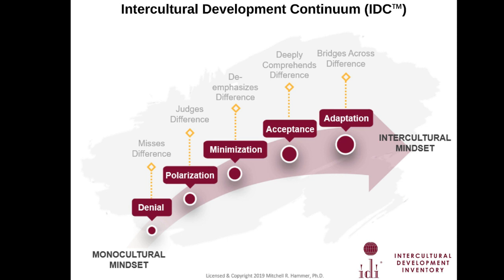Someone in minimization may truly believe 'we're all alike' and that focusing on differences will just cause conflict. From a dominant culture perspective, they may not see themselves as having a culture at all. From a non-dominant group perspective, it can be a 'go along to get along' strategy — emphasizing similarities in order to succeed and not ruffle any feathers.